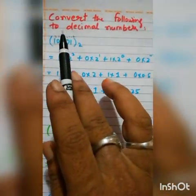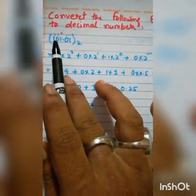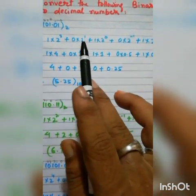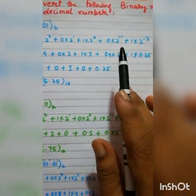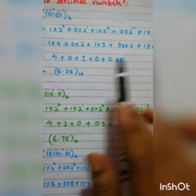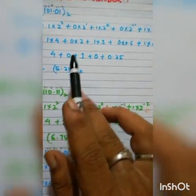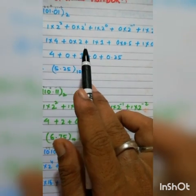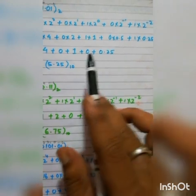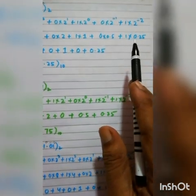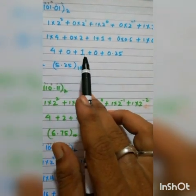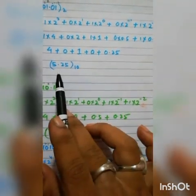So first assign the powers, then multiply each digit by 2 to the power. Now multiply: 1 × 4 = 4, 0 × 2 = 0, 1 × 1 = 1, 0 × 0.5 = 0, 1 × 0.25 = 0.25. Now add: 4 + 0 = 4, 4 + 1 = 5, 5 + 0.25 = 5.25. So 101.01 base 2 equals 5.25 in decimal.